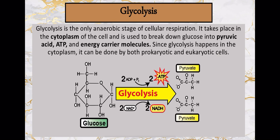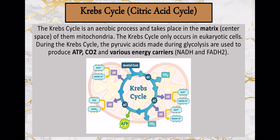Glycolysis is the only anaerobic stage of cellular respiration, meaning it can occur without oxygen. Anaerobic organisms can still do glycolysis, and prokaryotes can also do glycolysis because it doesn't happen inside the mitochondria — it happens out in the cytoplasm. In this process, you take glucose and break it down into pyruvic acid, a little ATP, and a couple of energy molecules. That pyruvic acid, ATP, and those energy molecules are then used to generate more products further along, feeding into the Krebs cycle — also called the citric acid cycle.